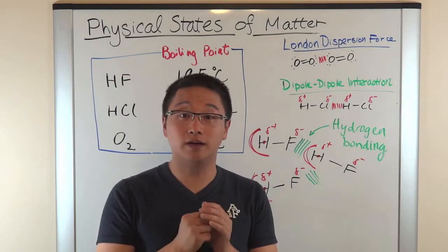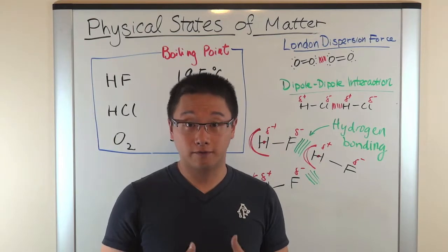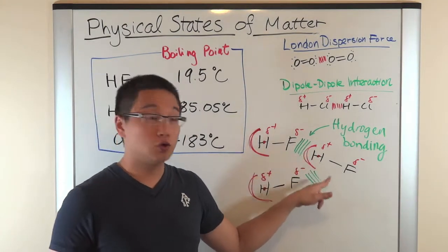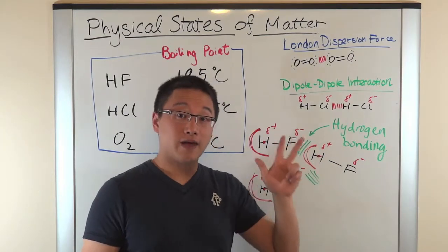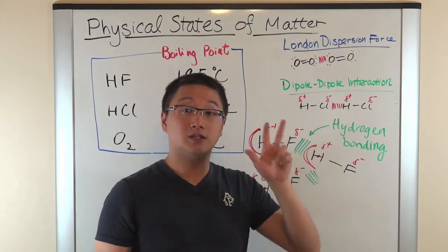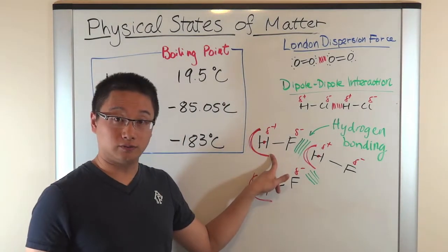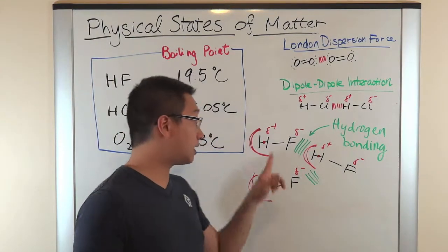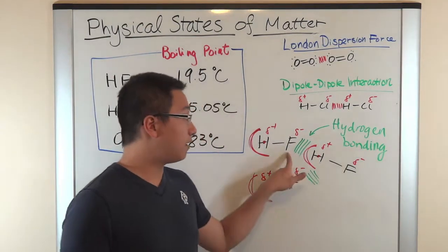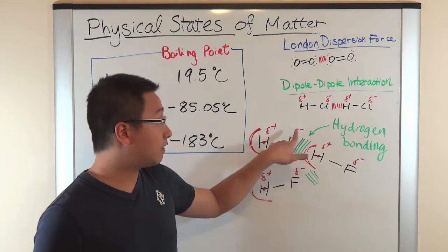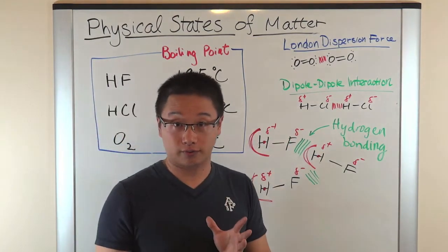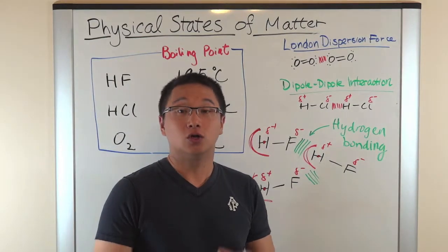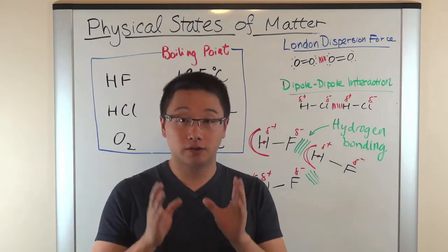The second requirement is that the hydrogen will be attracted to nitrogen, oxygen, or fluorine that is also covalently bonded to hydrogen. This is because hydrogen is quite weak in terms of electronegativity, and therefore the negative charge on those three elements will be slightly stronger — more negative than what we saw in dipole-dipole interaction. These are the two requirements for hydrogen bonding.